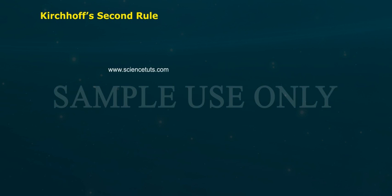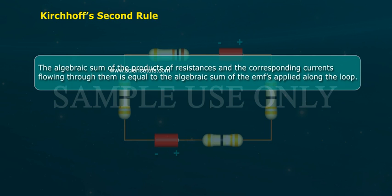Kirchhoff's second rule. The algebraic sum of the products of resistance and the corresponding currents flowing through them is equal to the algebraic sum of the EMF applied along the loop.